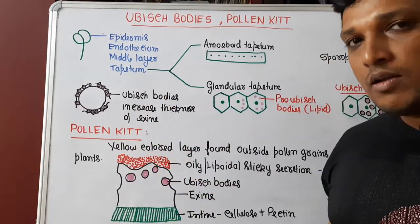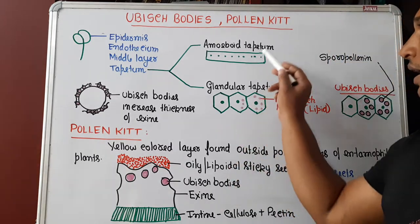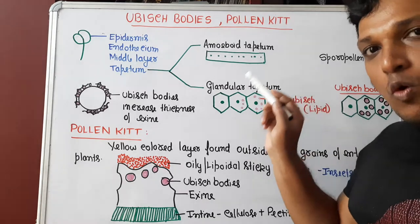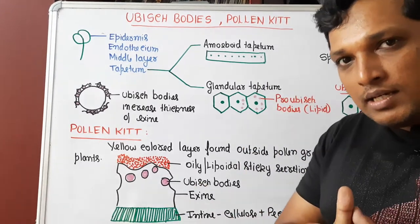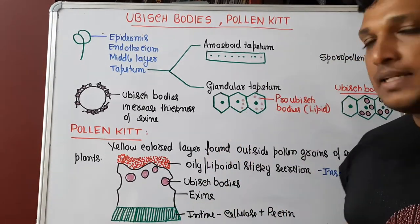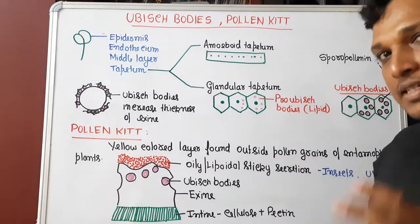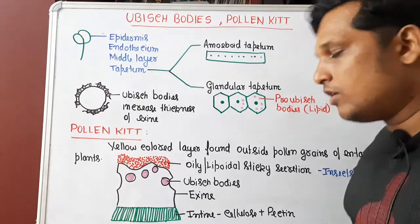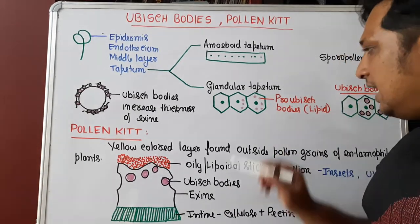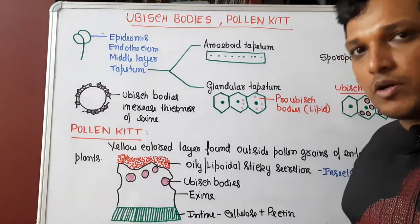There are two types of tapetum. Amoeboid tapetum, where you don't find a cell wall within the layer, whereas the second type is glandular tapetum, where a cell wall is present. This glandular tapetum is also called secretory tapetum because they secrete a lipid which is regarded as pro-Ubisch bodies.